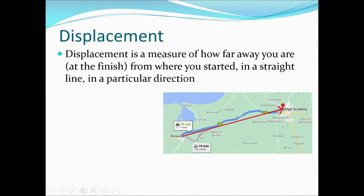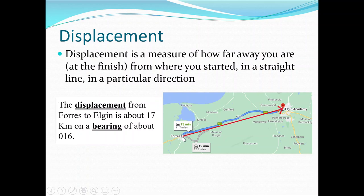Another example: the distance between Forres Academy and Elgin Academy is around 12 miles by road, following a wiggly path through the oakwood — that's how far you'd go by car. But the displacement is different: it's the straight-line red vector from your origin at Forres Academy to your final point at Elgin Academy. My quick online measurements say that's about 17 kilometers, and because it's a vector it requires a direction — I'll give you a bearing of 016 — and we'll cover bearings on the next slide.